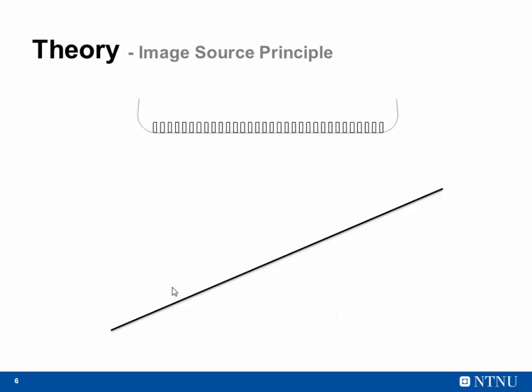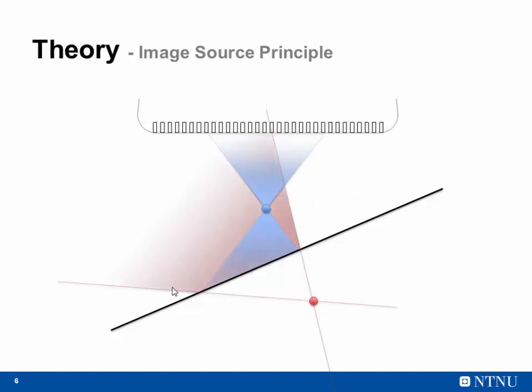One way of understanding this problem better is by using the image source principle. We have our probe and a planar reflector, and we focus our beam into a single point to produce a virtual source. The image source principle states that we can describe the wave reflected from that reflector as if it were produced by an image source located symmetrically with respect to the reflector plane. So there is no wonder we are having this beam artifact because the delays are coming from the wrong point.